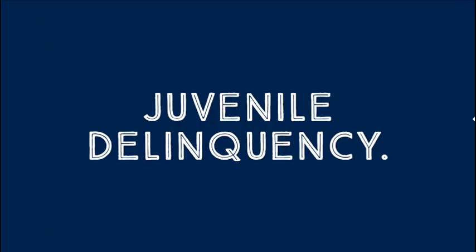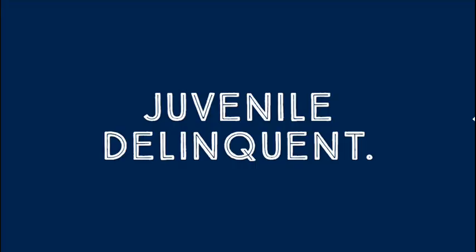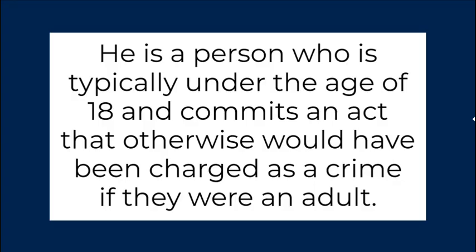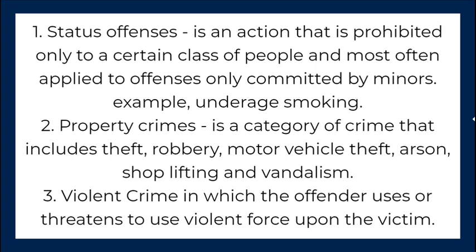Juvenile delinquency — it is the participation in illegal behavior by minors who fall under a statutory limit. Juvenile delinquent — he is a person who is typically under the age of 18 and commits an act that otherwise would have been charged as a crime if they were an adult.